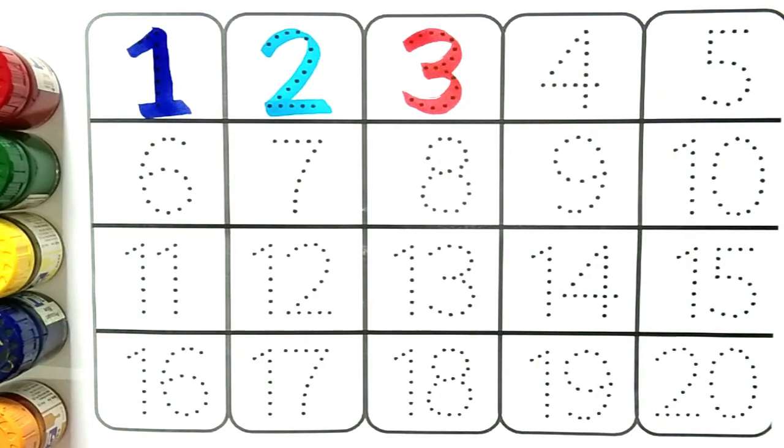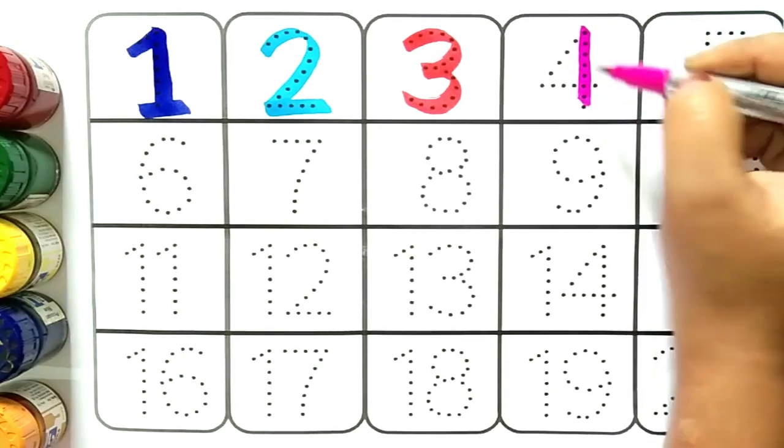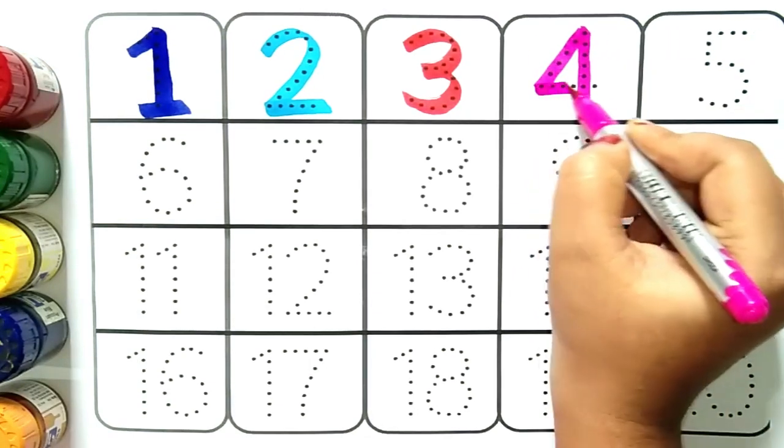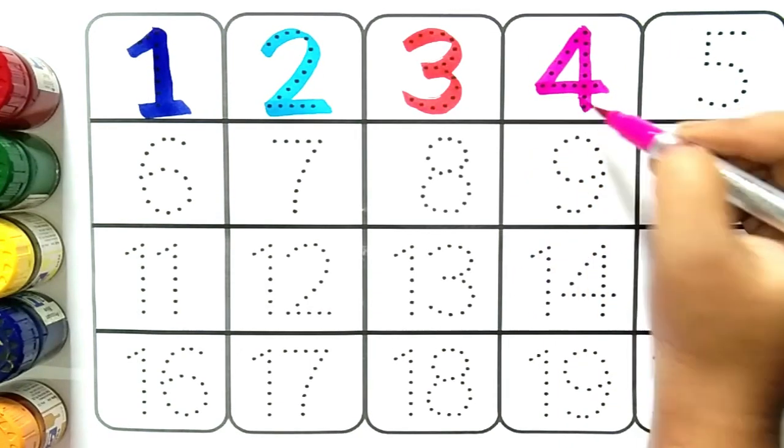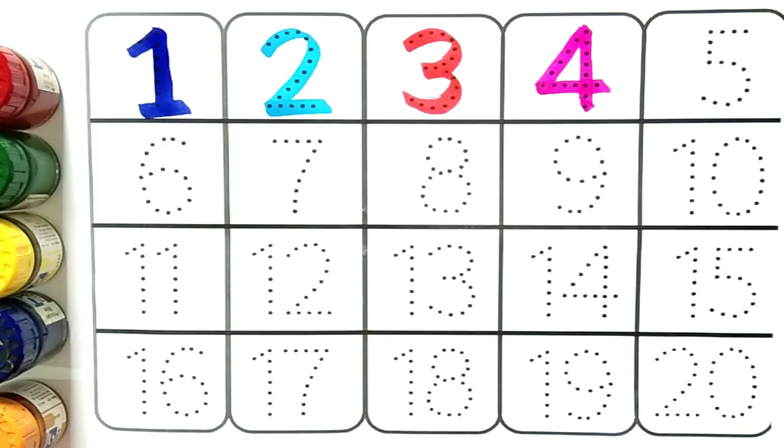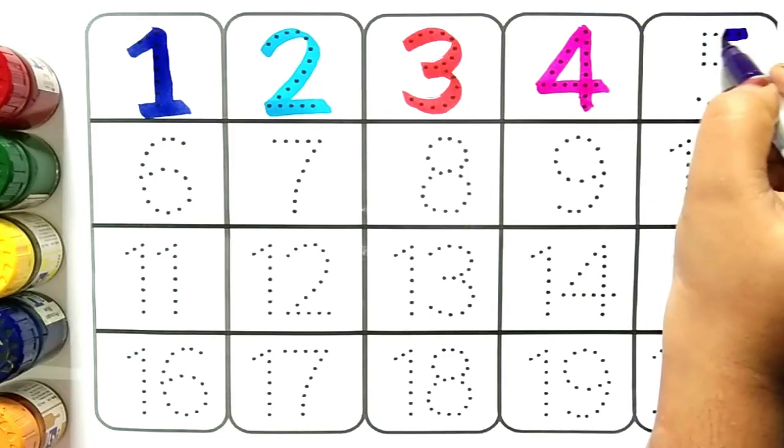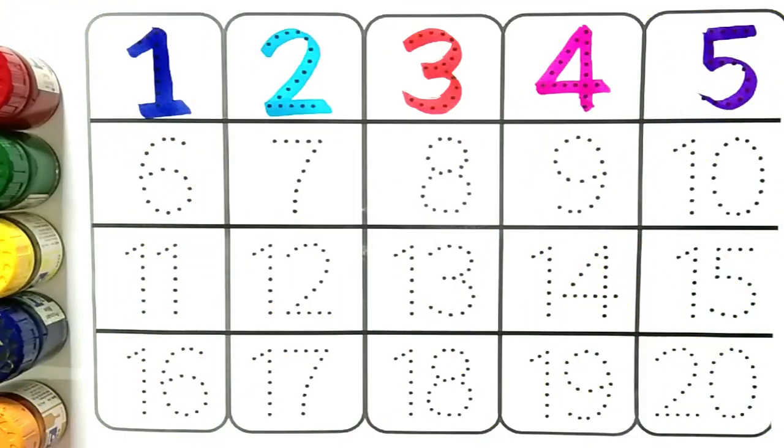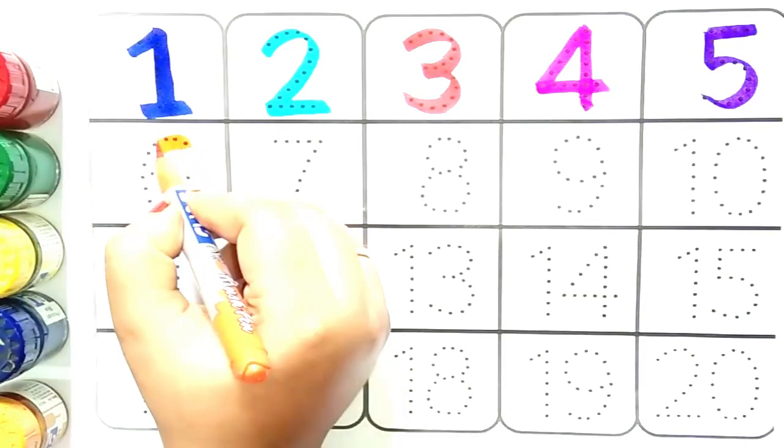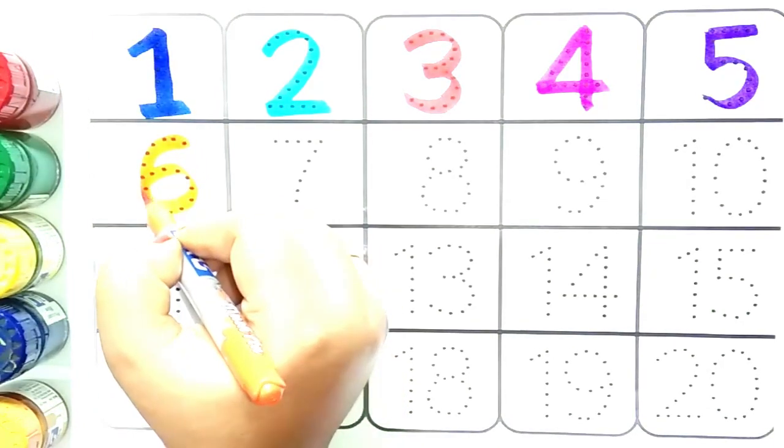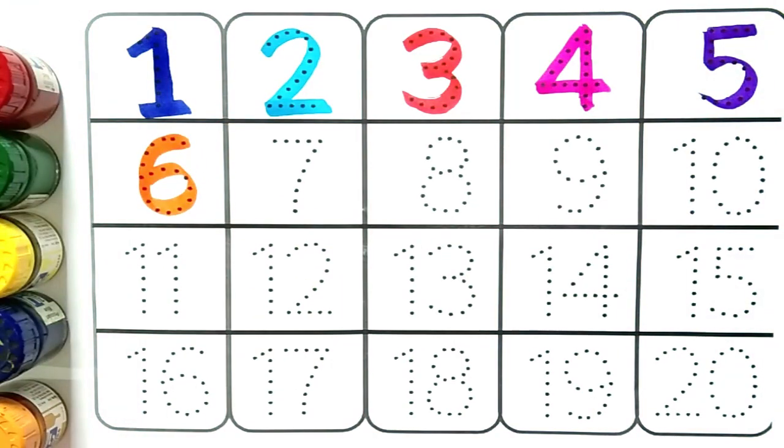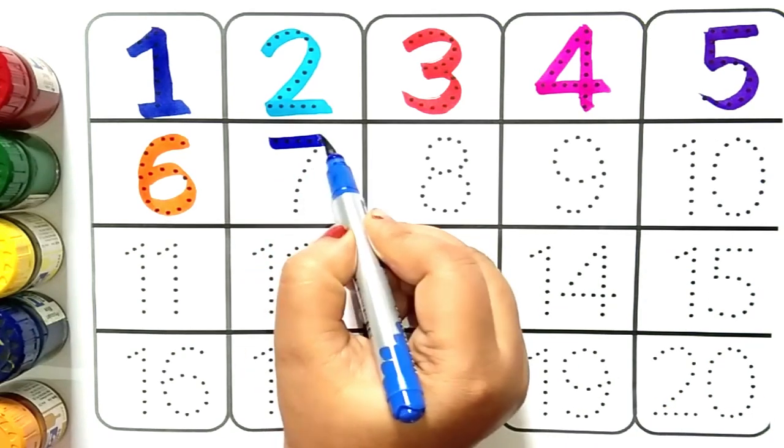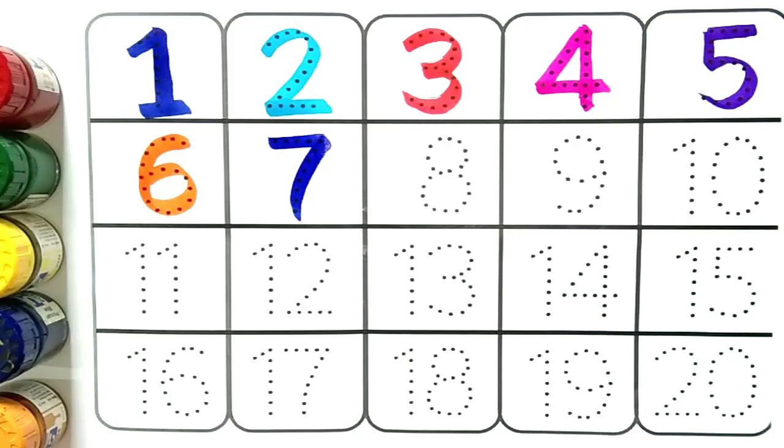After three comes four. This is number four. After four comes five. This is number five. After five comes six. This is number six.